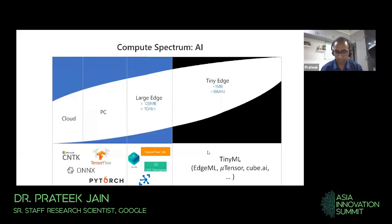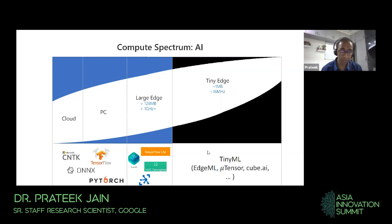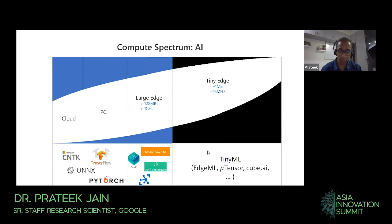In today's world, we are surrounded by devices, and by now pretty much everybody is convinced that we can make these devices much more efficient and much more powerful by bringing machine learning and artificial intelligence into them. Let's look at how our current capabilities scale in terms of infusing AI into these devices versus the compute spectrum of the device. On the left side, we have our cloud and PC devices, which have a lot of power, and that means we can train and deploy the largest AI models that we have.